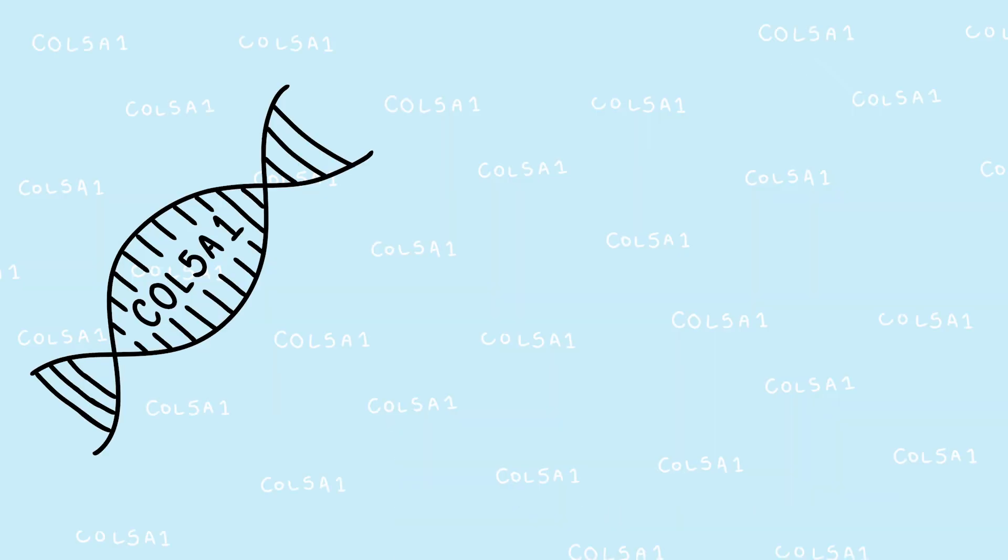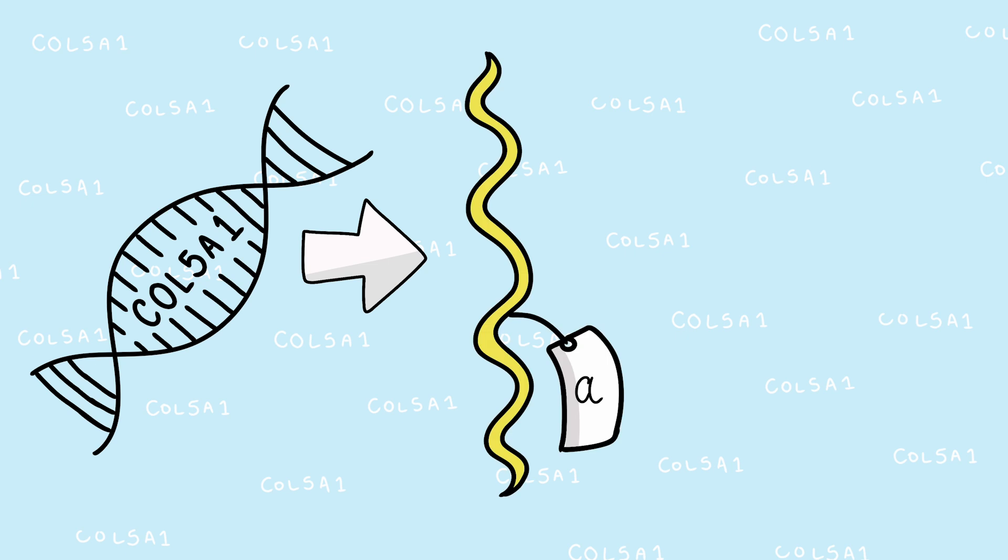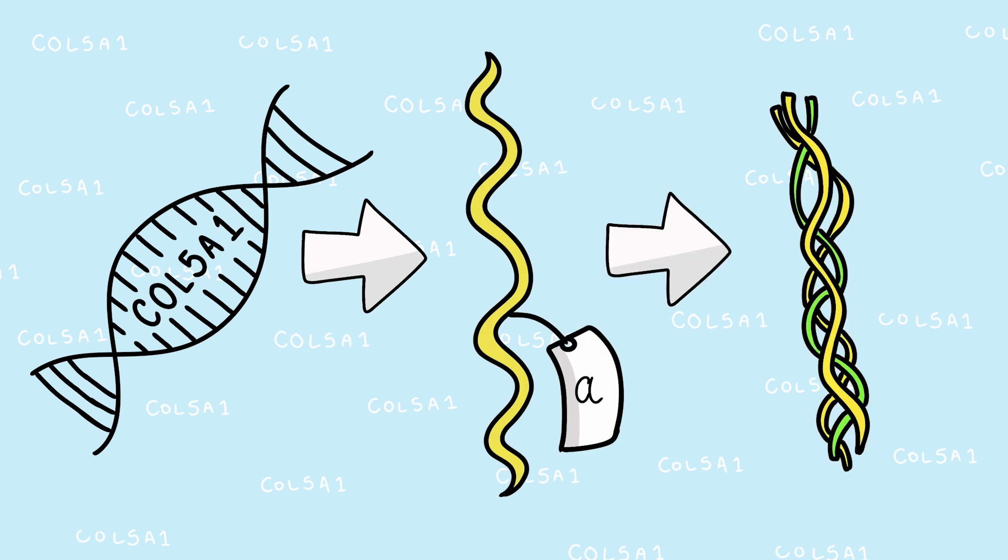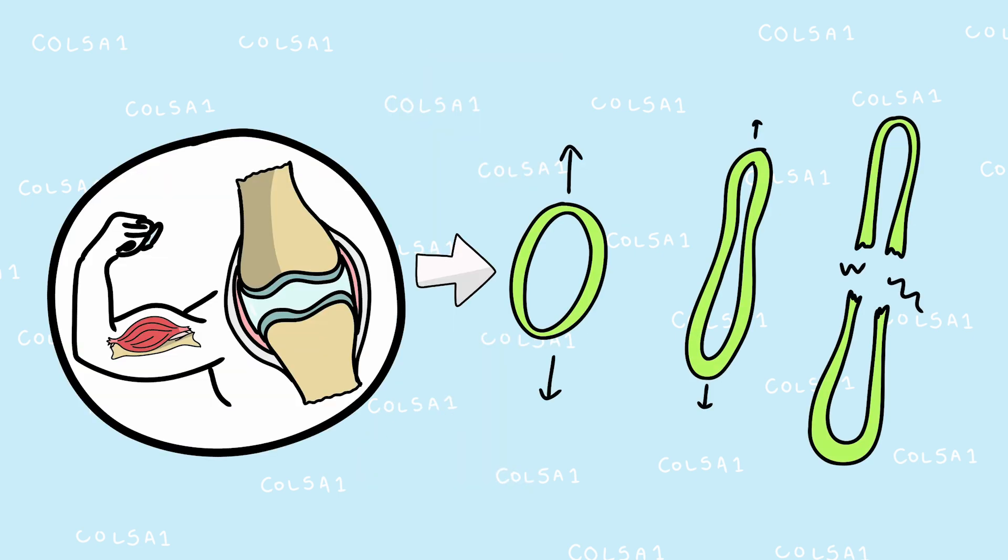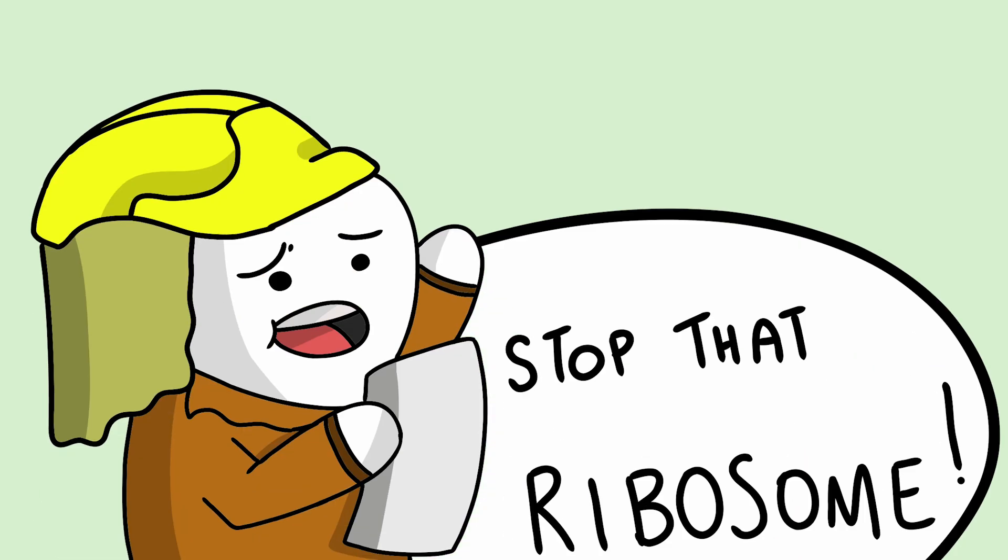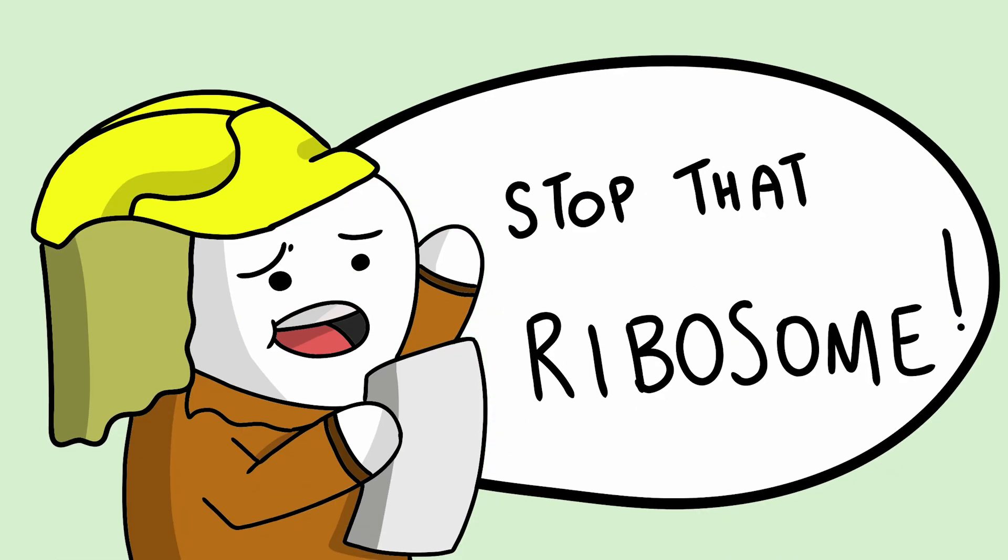In Collagen 5, COL5A1 encodes the two alpha-1 chains which intercalate with a single alpha-2 chain. Here, alpha-1 chains play the role of discerning fibrillar thickness and structure, ultimately changing the elasticity and tensile strength of connective structures. Considering this, the transcriptional and translational regulation of COL5A1 is heavily monitored.